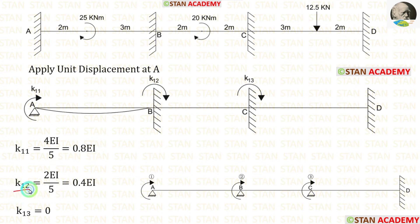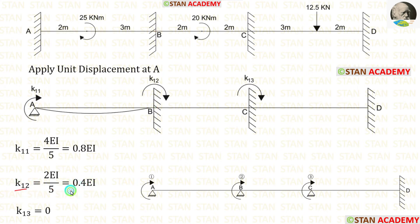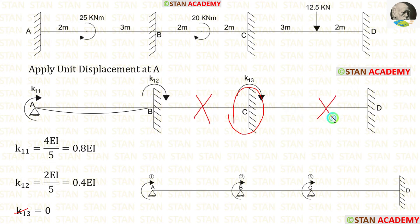Now let us calculate k12. From point B we look on both sides. On the left side there is a hinged support, so the formula is 2EI/L; length of BA is 5 m. On the right side of B there is no slope curve, so there is no stiffness value. Therefore k12 = 0.4EI. For k13, from point C we look on both sides — there is no slope curve on either side — so k13 = 0.